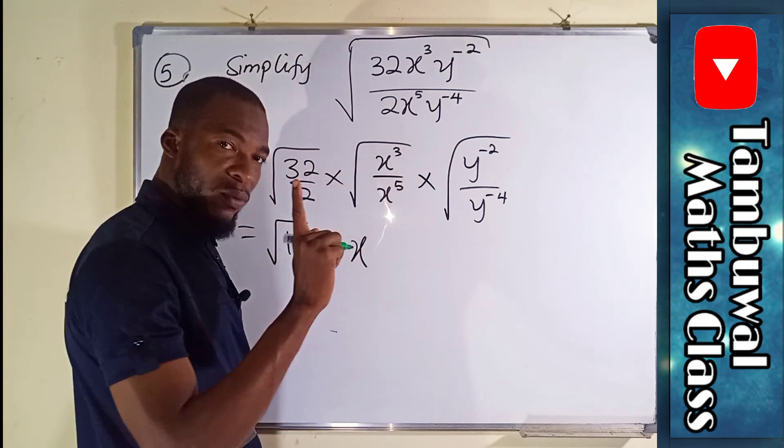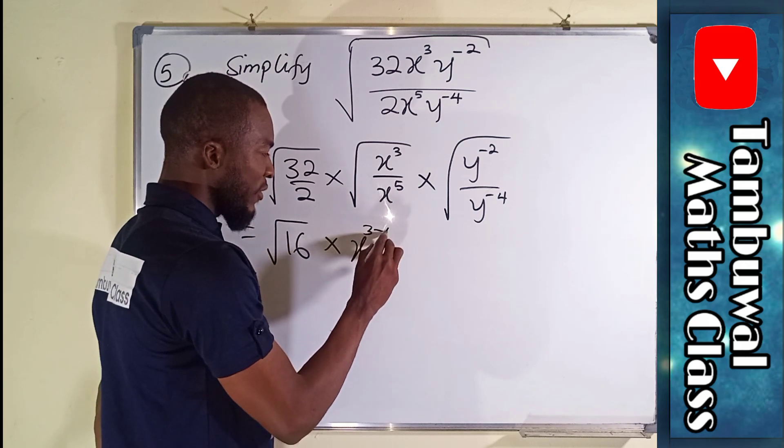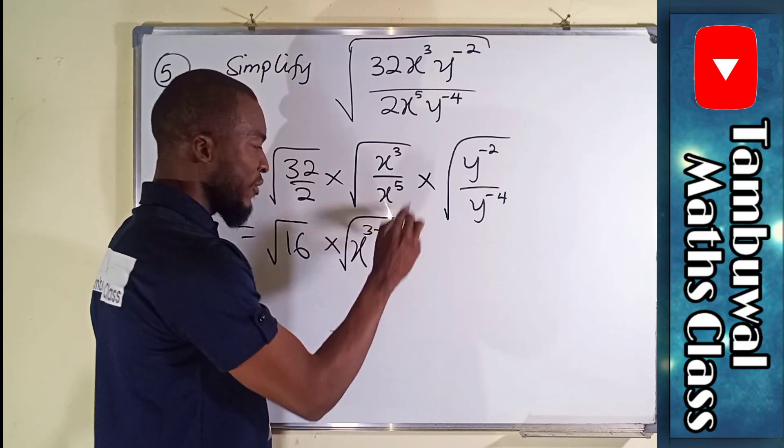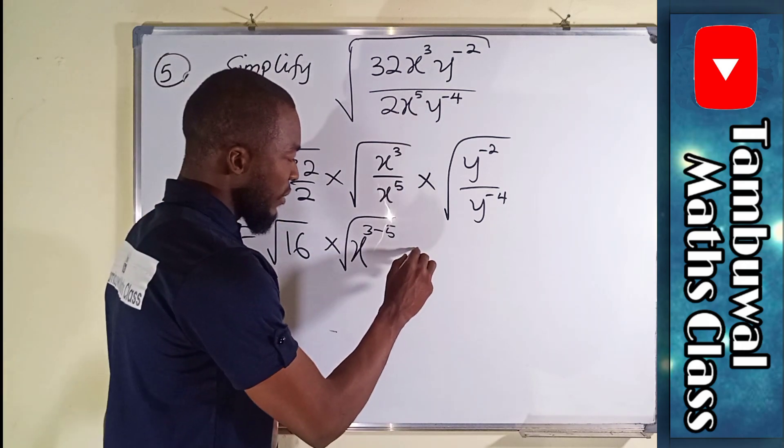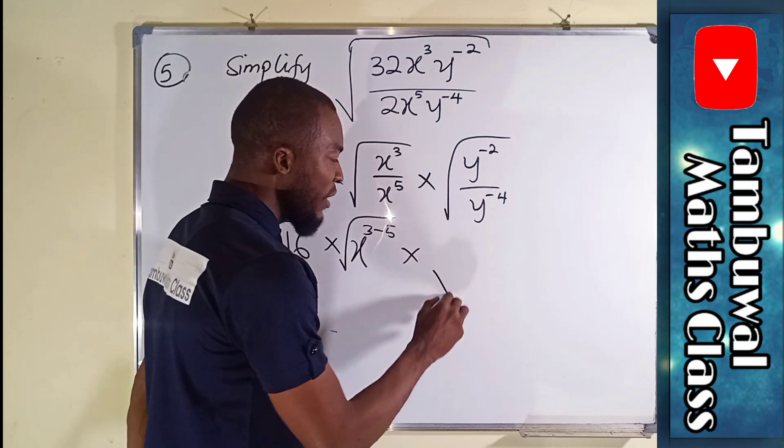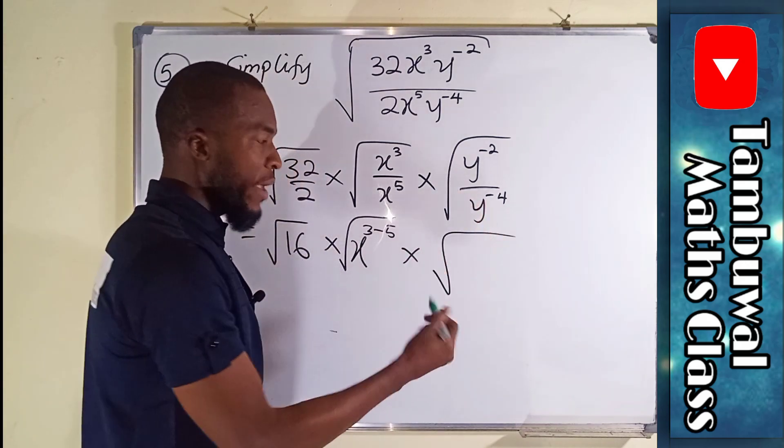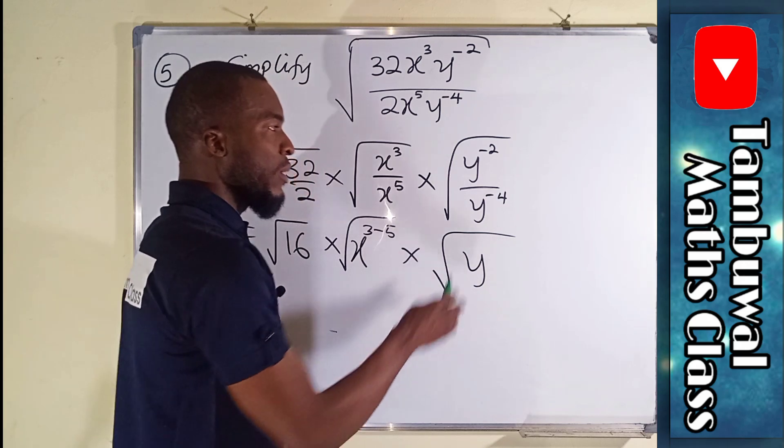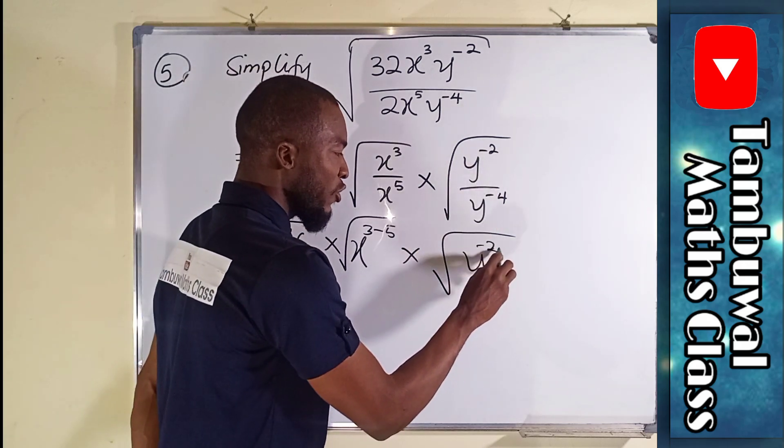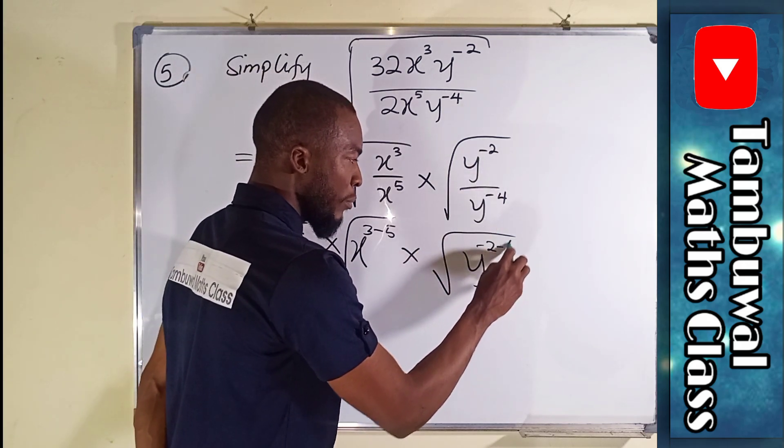So this is x, you take a single x, you see 3 minus 5. Remember we have square root. Times the same thing here, the base are the same y, take one of them, subtract.